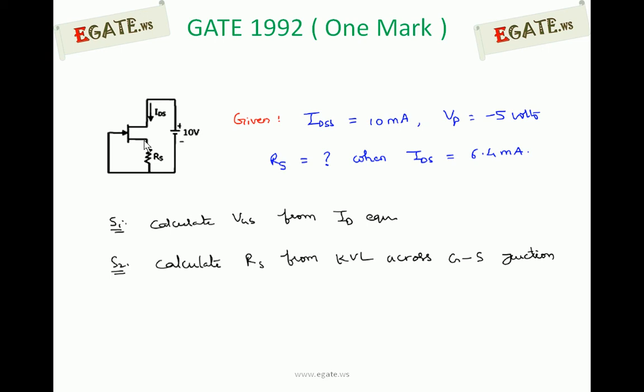Before going for this one, answer one thing. If IDS is the drain current entering the drain terminal, how much current is going through RS? Is that same as IDS or lesser or greater? Can we say that the same current flows from drain to source for a JFET? Yes. Always the current entering drain terminal flows through source terminal. So current entering drain is leaving the source. Drain and source currents are always same. That's why we name the notation as IDS. The same current is flowing through RS.